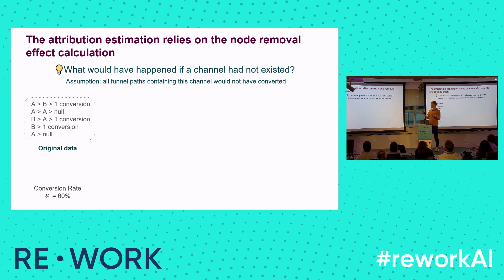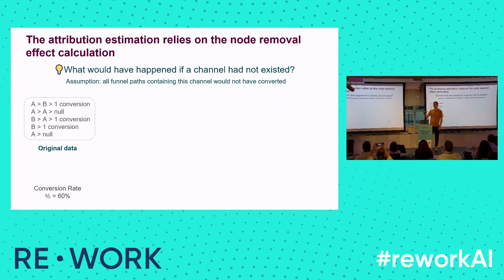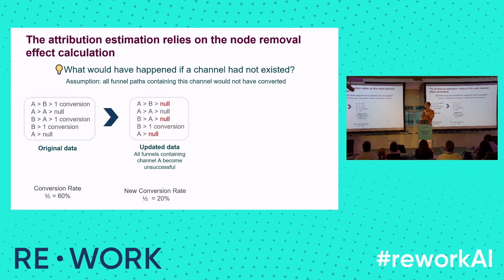To calculate each channel's attribution, we take the opposite approach and ask: what would have happened if the channel had not existed? We make a strong assumption: all funnels containing that specific channel would not have converted if the channel had not existed. Concretely, every path containing channel A becomes unsuccessful — the outcome becomes null.